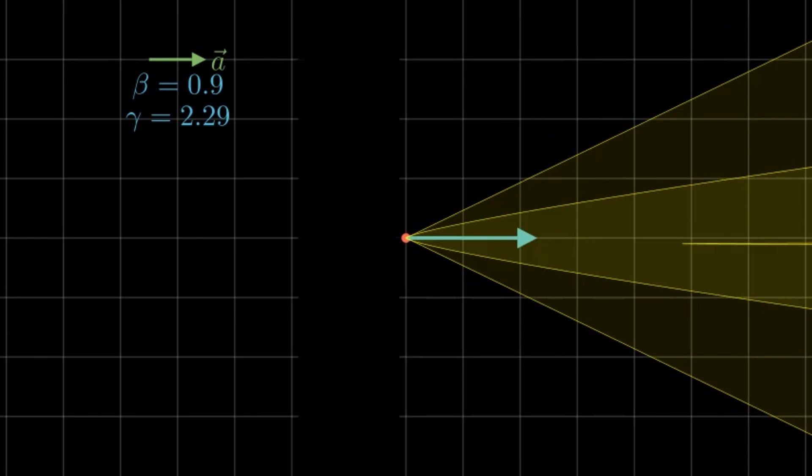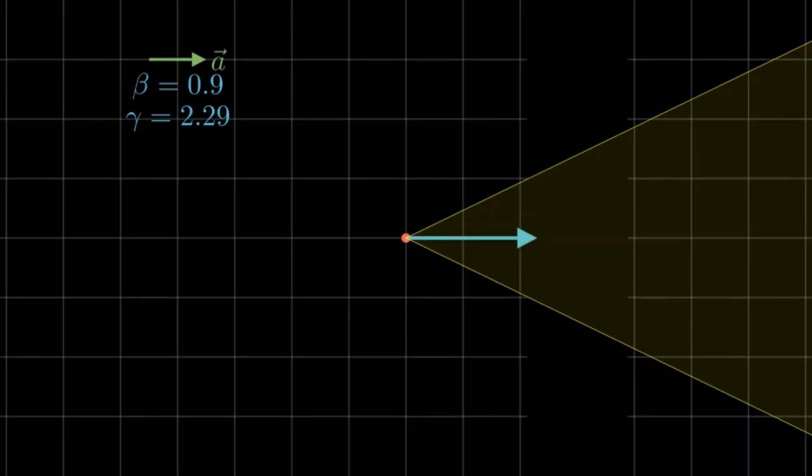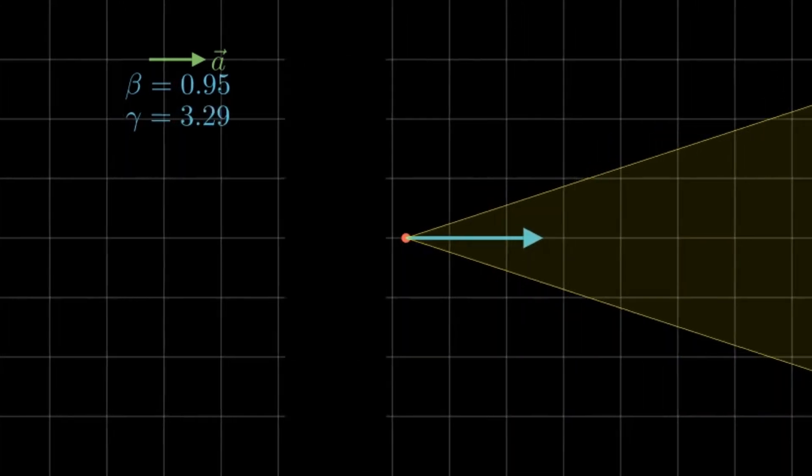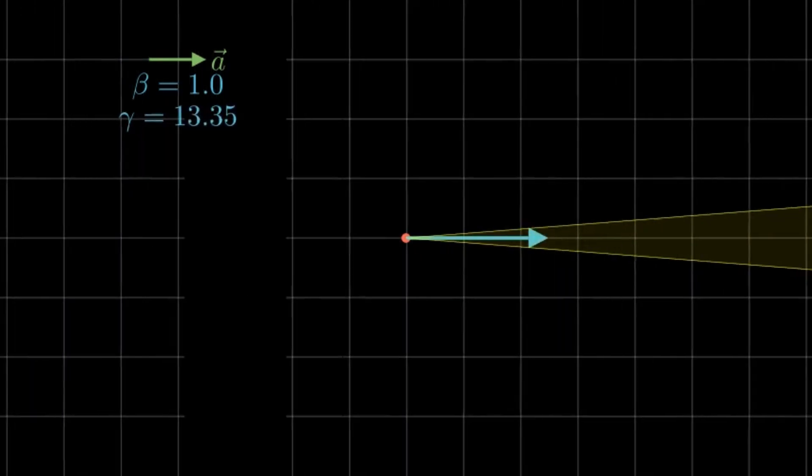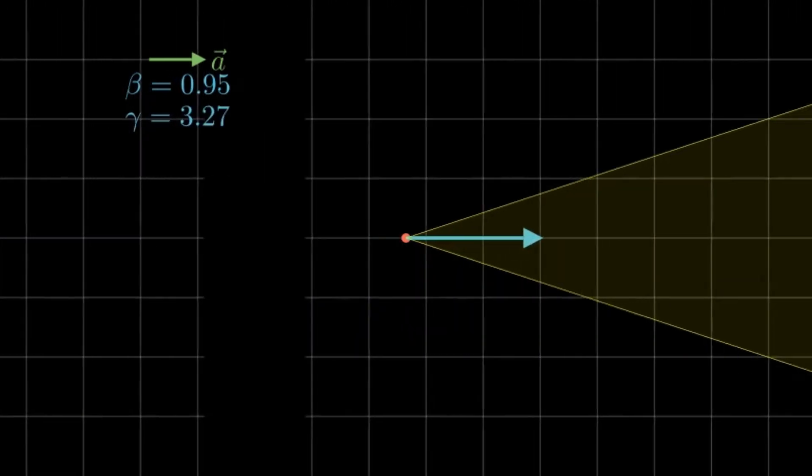In the limit as beta approaches C, all radiation is emitted exactly in the direction of the velocity. In later visualizations, I will use this one over gamma cone approximation to convey the direction of emitted radiation due to the beaming effect.